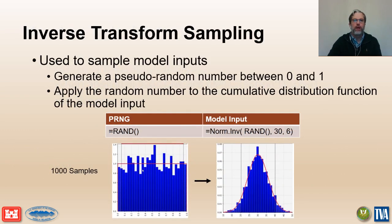One of the key concepts used in the Monte Carlo method is inverse transform sampling — this is how input parameters are sampled according to their probability distributions. First, we generate a uniformly distributed random number between 0 and 1, as shown using the RAND function in Excel. Next, we apply the random number to the cumulative distribution function for the variable, as shown using the NORM.INV function in Excel, assuming the input is normally distributed. The figures show results after repeating this for 1,000 samples, where the sampled random numbers reproduce the normal distribution for the model input parameter.